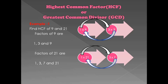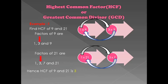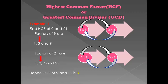Step 1 is to find the factors of the given numbers. Then, step 2 is to identify the common factors among them. Here, 1 and 3 are common factors of 9 and 21, but we need the highest common factor. The highest common factor is 3. Hence, the HCF of 9 and 21 is 3. This is how we identify the HCF of any given set of numbers.